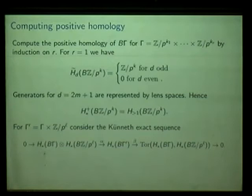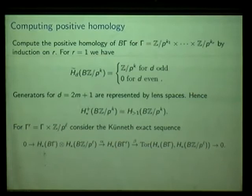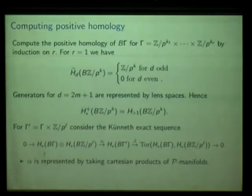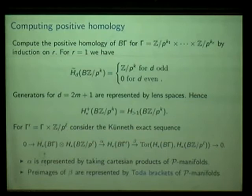To pass to higher ranks we use the Künneth exact sequence, which gives the homology of Bγ' (a product of two groups) in terms of a tensor product of homologies on the left and a Tor product on the right. The left-hand side is easy: this map is represented by taking Cartesian products of P-manifolds — elements here and there are represented by P-manifolds together with maps to the spaces and we take Cartesian products. However, the preimage of the connecting homomorphism, involving the Tor bracket construction, requires more work.